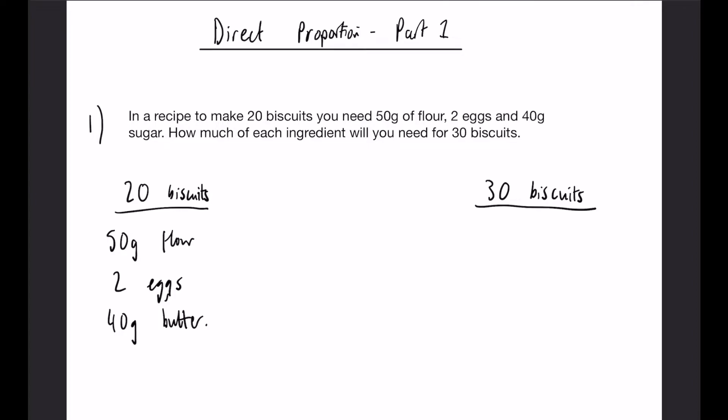So in this case we could go down to 10 biscuits, because if we divide our 20 by 2 we get 10, and then we can multiply by 3 from there. To get from 20 to 10 we have divided by 2, so that means all of these values we're going to do the same. So for 10 biscuits we're going to need 25 grams of flour, 1 egg, and 20 grams of butter.